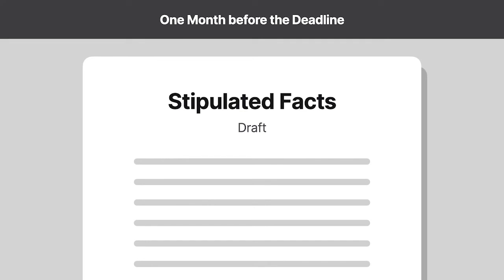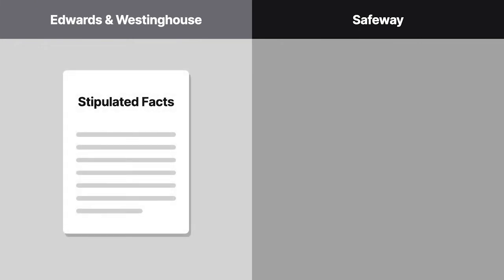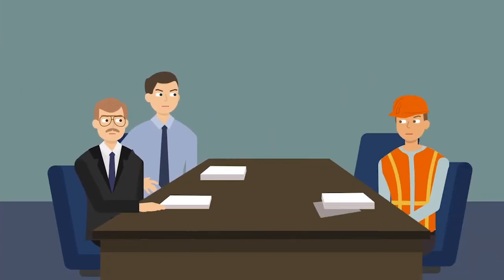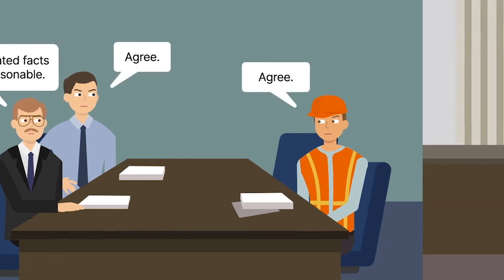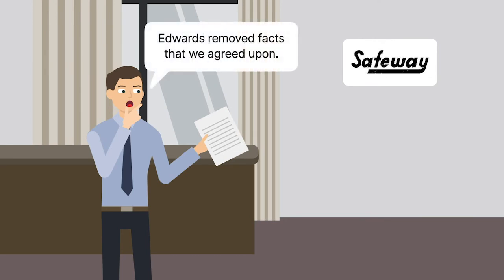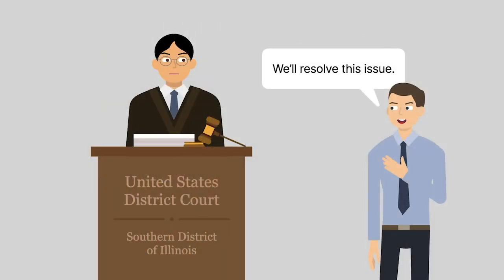One month before the deadline, Edwards circulated a draft of the stipulated facts, but Safeway refused to sign it because discovery wasn't yet complete. Edwards and Westinghouse later agreed on a set of stipulated facts. Safeway, however, submitted its own statement. At the judge's urging, the parties met to come up with a combined version they all could sign. They left the meeting with an understanding, but when Edwards later circulated a draft, Safeway refused to sign, claiming that Edwards had removed facts the parties had agreed upon. Even so, Safeway expressed continued willingness to work toward a resolution.